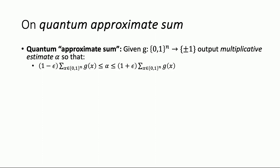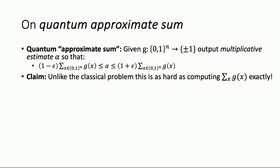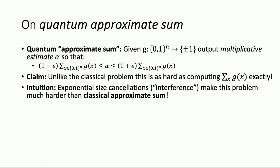Things are very different when we consider the quantum approximate sum problem — this is the whole point of these results. I'm going to do exactly the same thing but consider the quantum variant: change the output from {0,1} to ±1. Unlike the classical sum problem, I'm going to claim this problem is exactly as hard as the exact sum itself. When we thought about exact complexity, the ±1 change meant nothing. But when we think about approximate complexity, it seems to mean everything. The intuition is that we have large cancellations in ±1 sums that we don't seem to have in {0,1} sums.